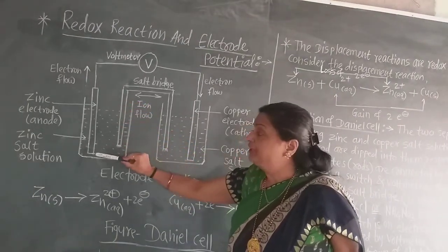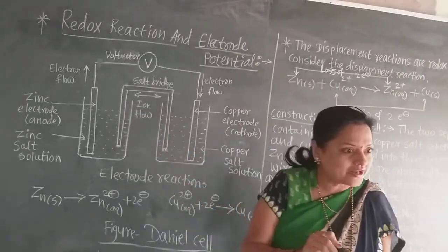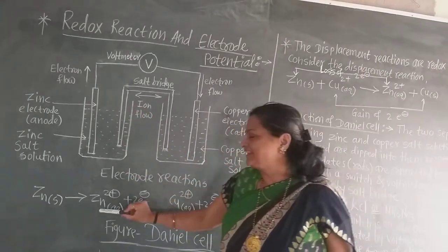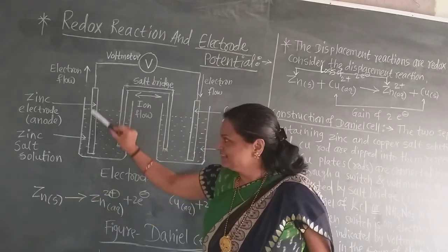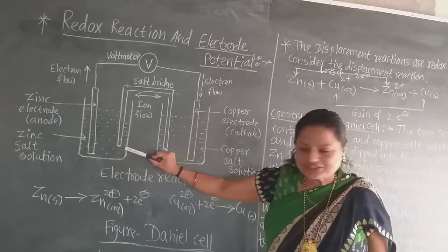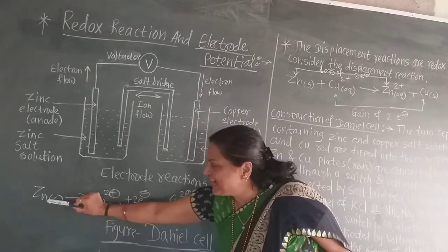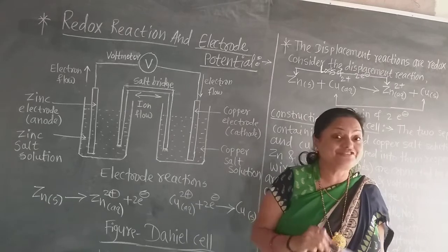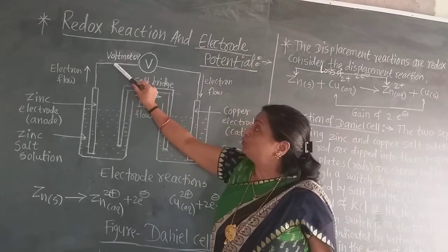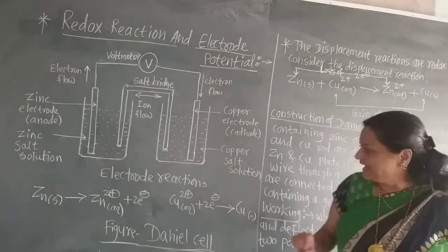When the zinc rod is dipped into zinc sulphate solution, it gets ionized. The rod has zinc atoms, and the atoms get ionized: Zn(s) → Zn²⁺(aq). The zinc atom gives two electrons because it is a very reactive element, and these two electrons flow through the wires to the copper rod — that is the cathode.